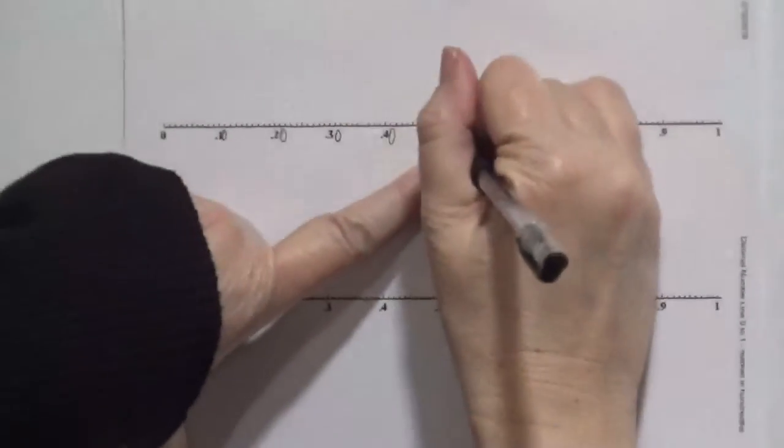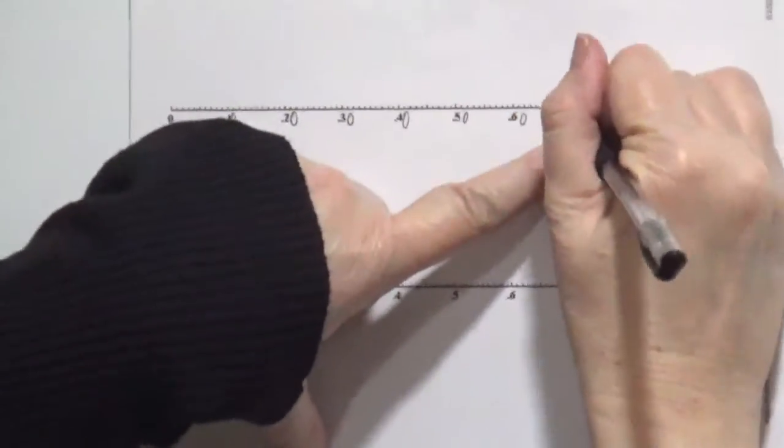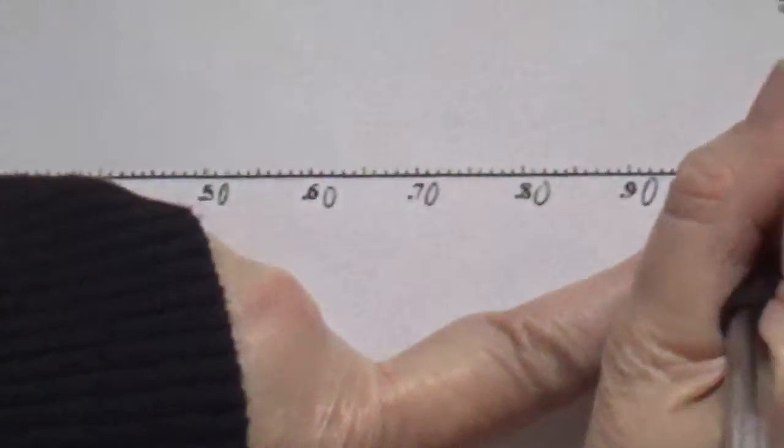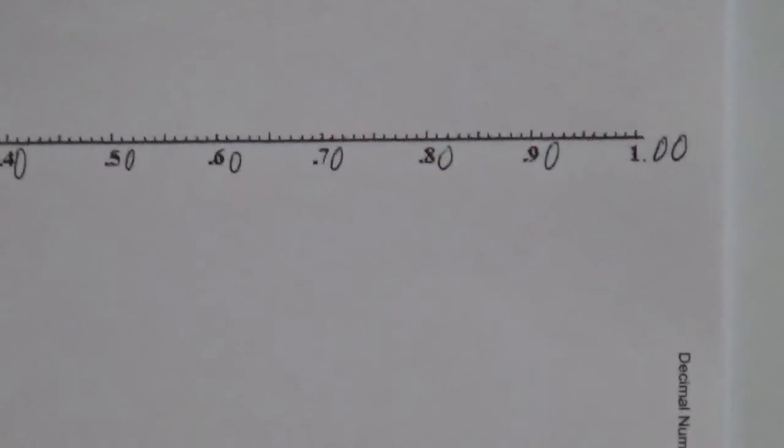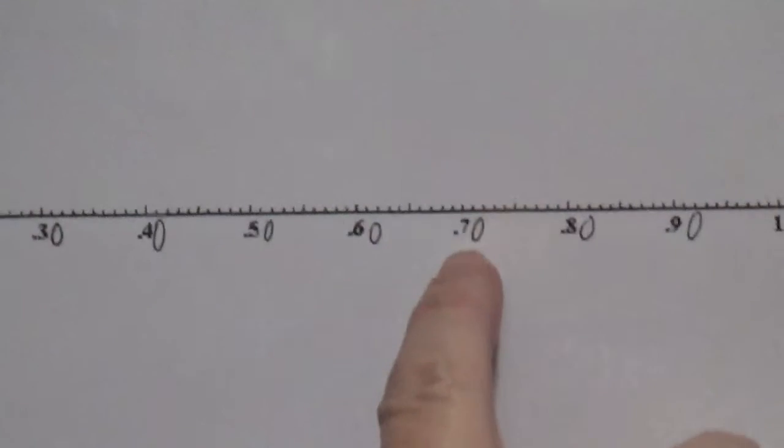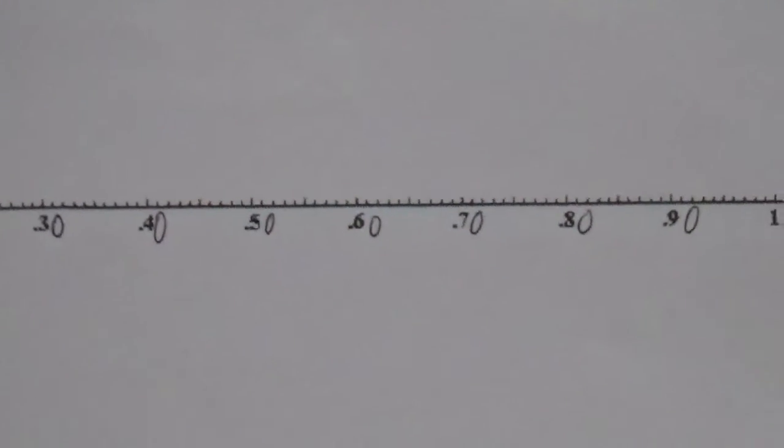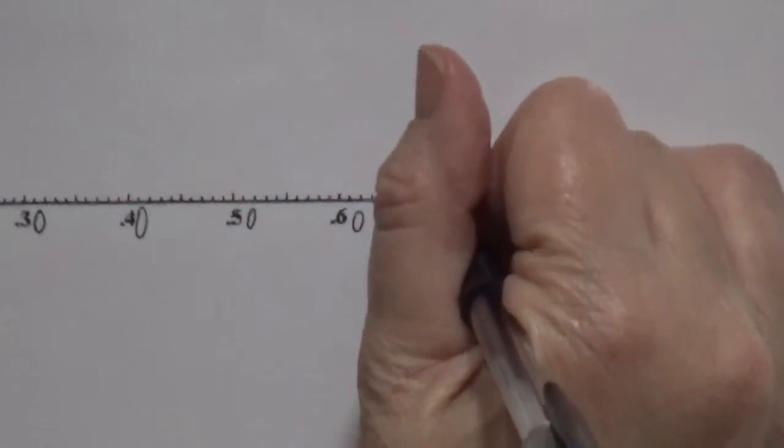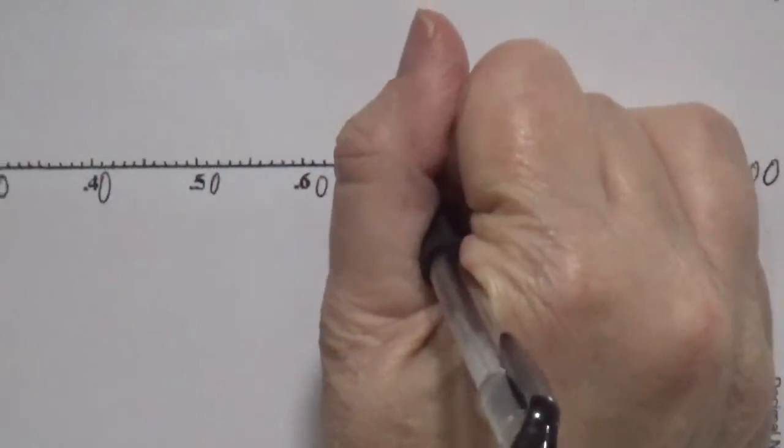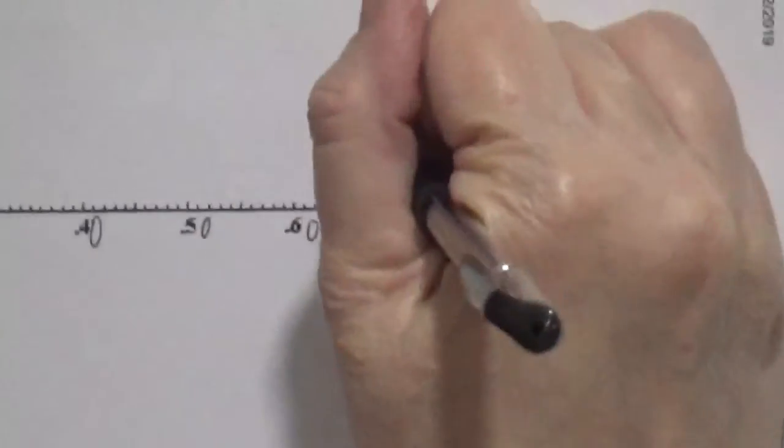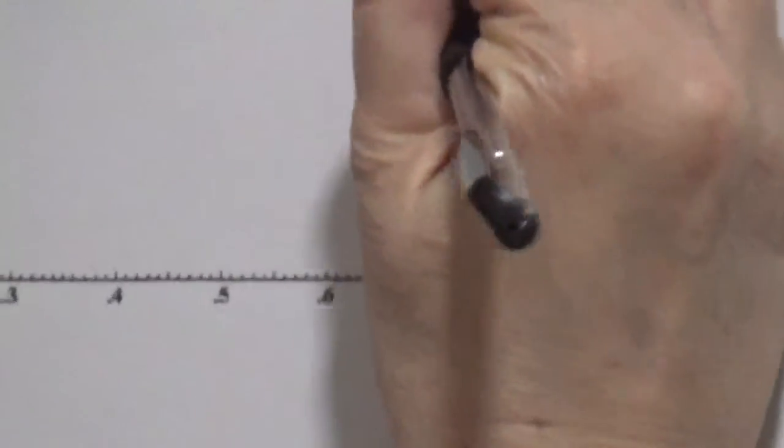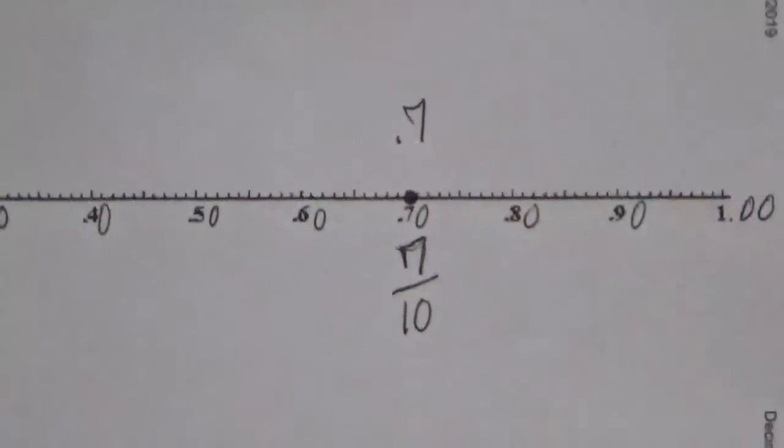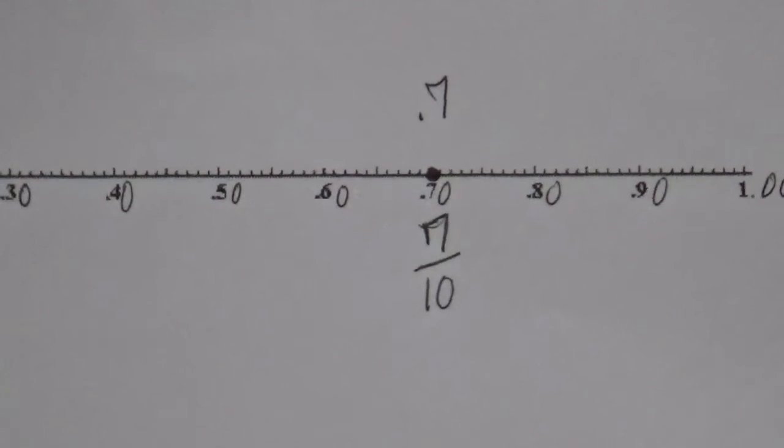So we need to locate seven dimes out of ten dimes. So first of all, we need to go ahead and set this up. Ten, twenty, thirty, forty, fifty, sixty, seventy, eighty, ninety, one whole dollar. And I just go ahead and line it up like that so you can see we know that seven dimes is equivalent to seventy cents and that would be five. So when we're writing it, this is seven dimes, seven out of ten dimes.